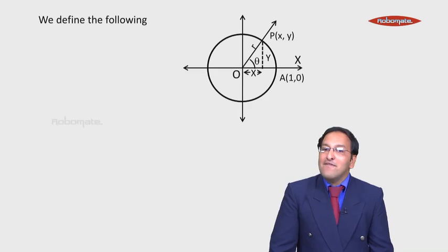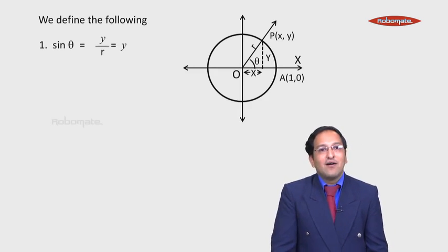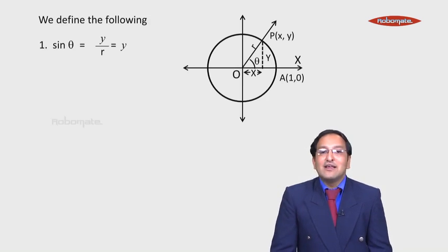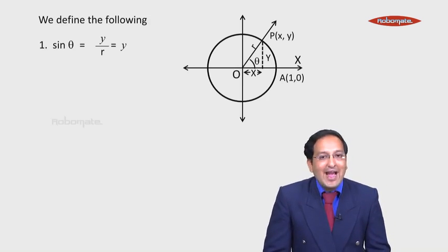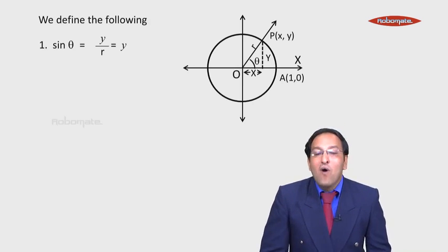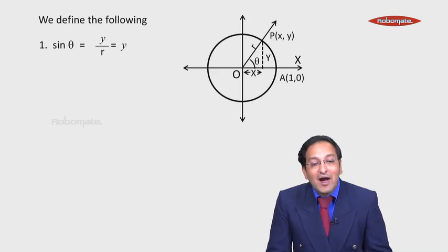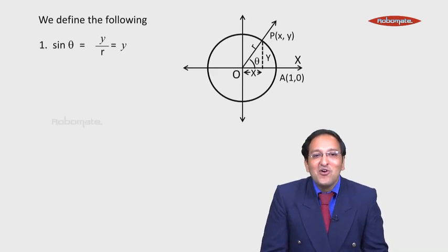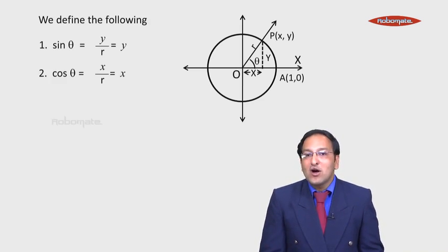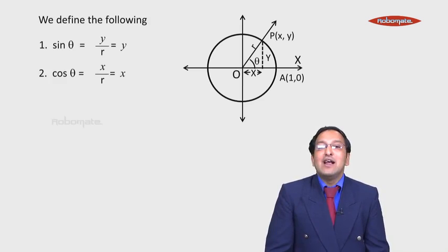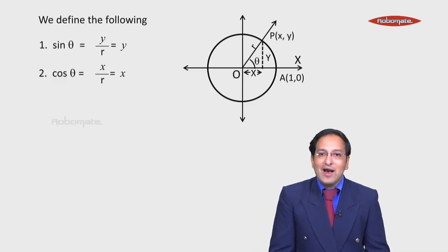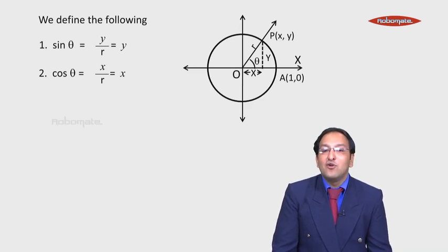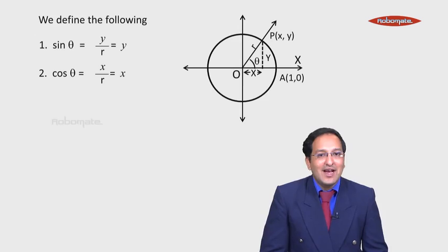Using this standard unit circle, we define the following. Sin θ equals opposite upon hypotenuse, which from the figure is y upon R. Since the radius R equals 1, substituting gives y upon 1, which equals y. So sin θ equals y. Cos θ is adjacent upon hypotenuse, which is x upon R. Substituting R equals 1 gives x upon 1, which equals x. So sin θ equals y and cos θ equals x.